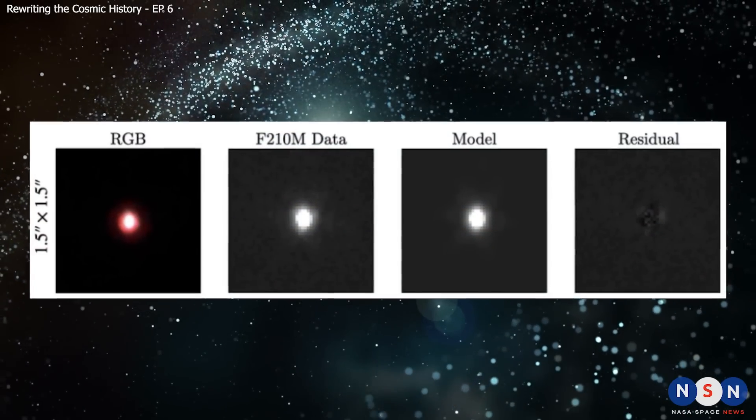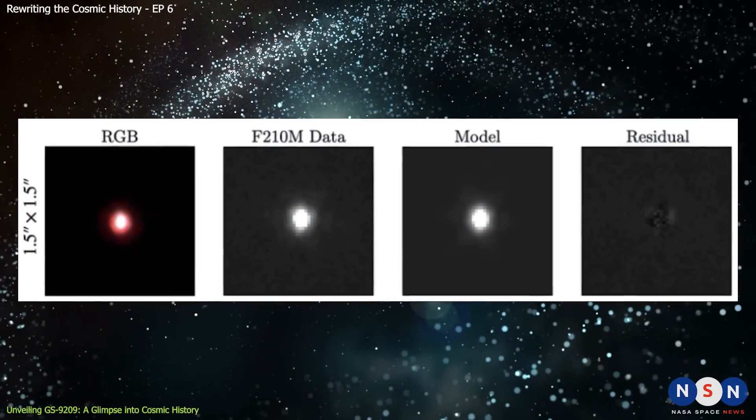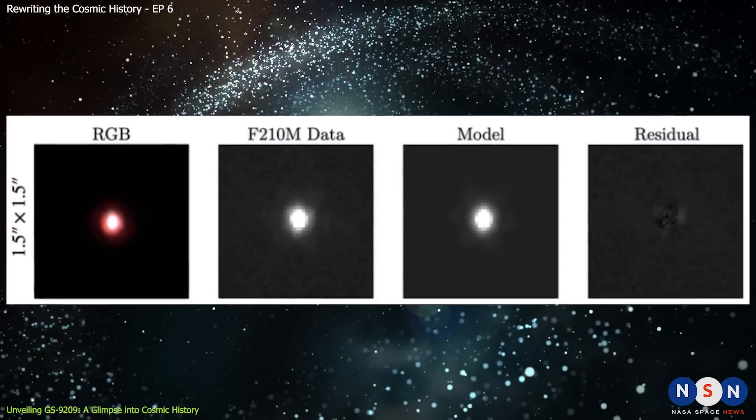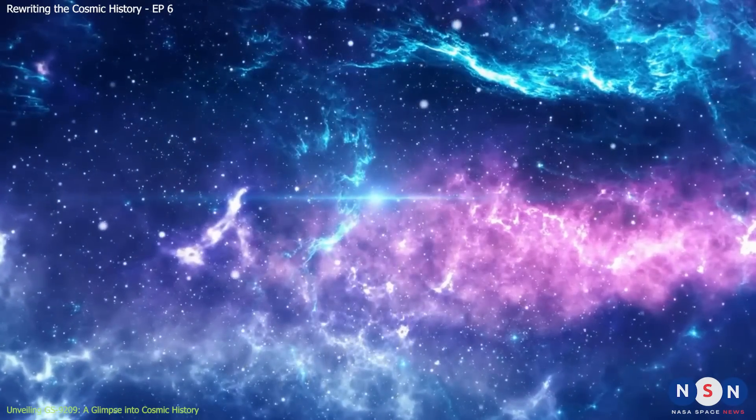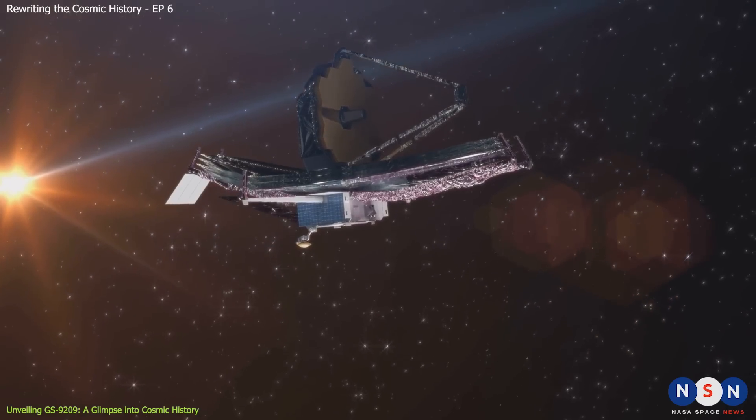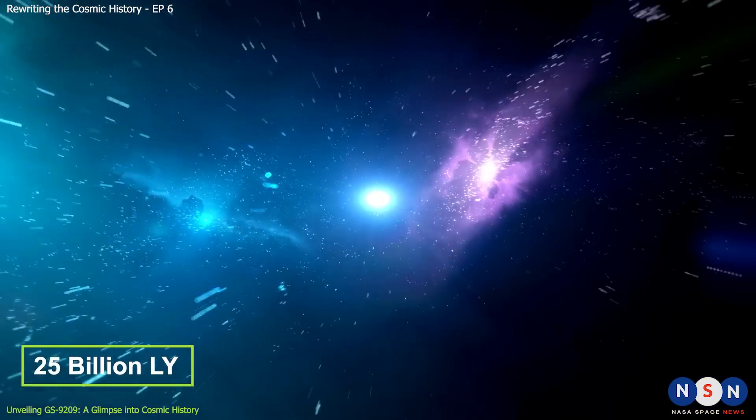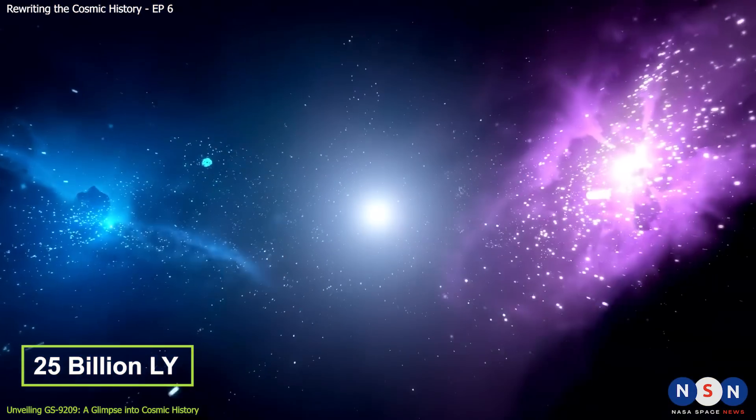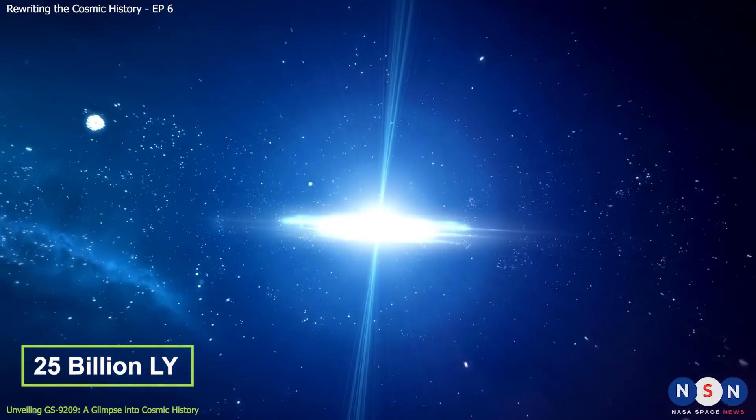One of the recent discoveries that puzzled scientists with its properties is GS 9209, a galaxy that is so far away that we need the James Webb Space Telescope to observe it. This galaxy is located 25 billion light-years away from us, and we are seeing it as it was 13 billion years ago, when the universe was only a fraction of its current age.